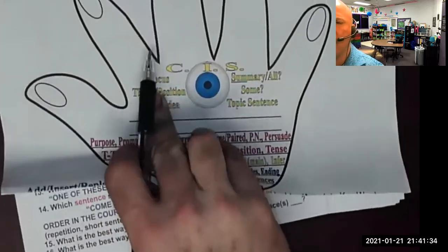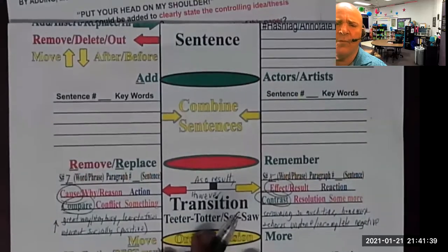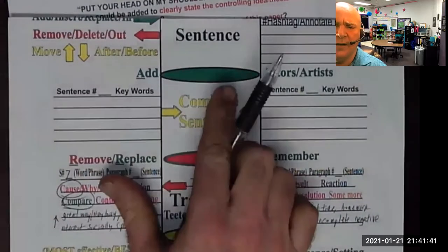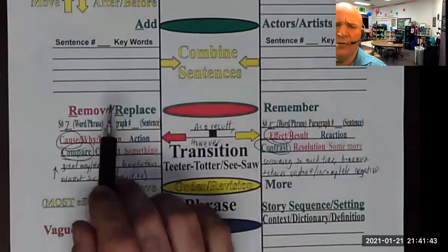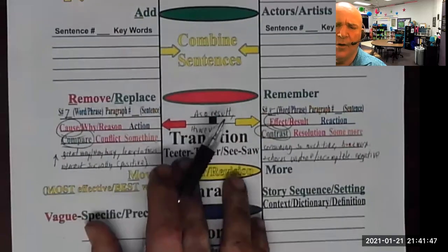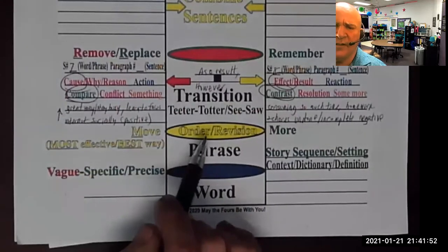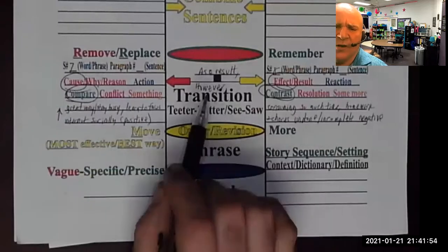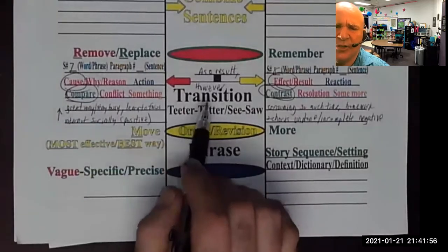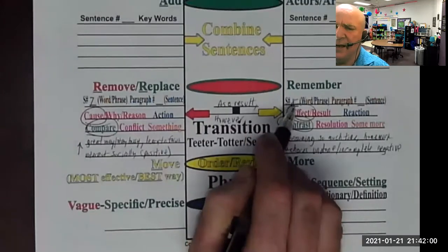Revising is fixing the content, and it has to do with ARM: Adding (green), Removing (red), Replacing (green out and in), or Moving things around — which means changing the order. The question says 'What is the best transition?' and it says to add it at the beginning of sentence eight.